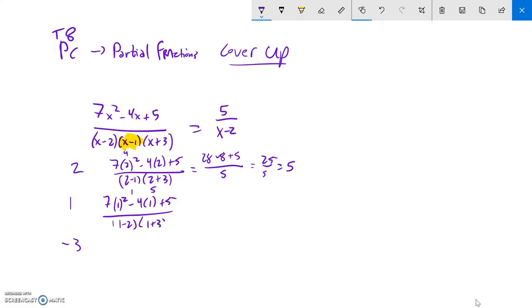So, this is 1 squared is 1. 7 minus 4 plus 5 over. And 1 minus 2 is negative 1. And 1 plus 3 is 4. So, my denominator is 4. And my numerator, 7 minus 4 is 3. 3 plus 5 is 8. Oh, it's negative 4 down here. 8 divided by negative 4 is negative 2.